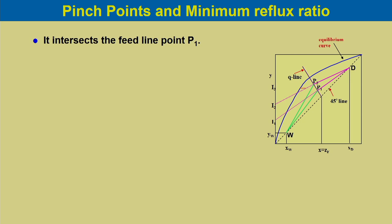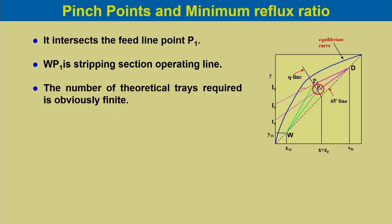The operating line D-I1 intercepts the feed line at P1, and W-P1 is the stripping section operating line. The number of theoretical trays required is finite because there is a gap between the equilibrium curve and both operating lines. As the reflux ratio decreases from R1 to R2, the slope decreases to R2/(R2+1), the intercept moves from I1 to I2 (equal to xd/(R2+1)), and the upper operating line becomes D-P2, intersecting the feed line at P2. The driving force is less at all points and the number of theoretical trays increases.